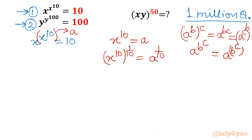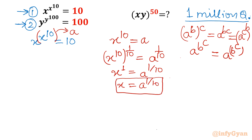Coming back to our original equation: x^10 raised to the power 1/10. Using that property, the left-hand side becomes x^1, which is just x. So x = A^(1/10). Now I will substitute this value of x back. The exponent is A (which is x^10), so the expression becomes: (A^(1/10))^A = 10.